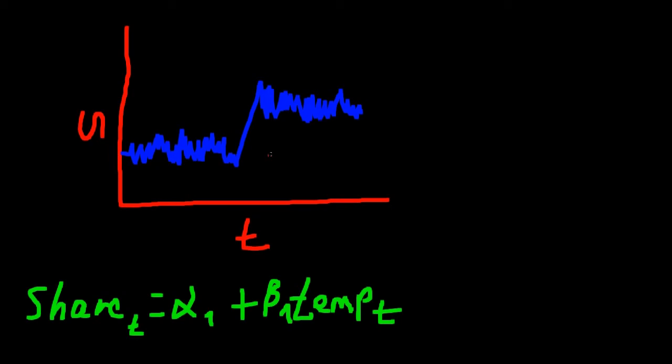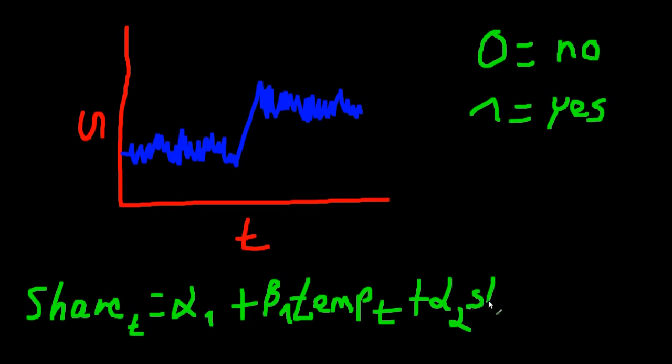Let's construct a dummy variable that indicates whether the oil price shock has happened or not. So the dummy variable equals zero if there is no oil price shock or if the oil price shock has not happened yet, and one if the oil price shock has happened. So our model actually becomes share at time T equals alpha 1 plus beta 1 times temperature at time T plus alpha 2 times shock, this is our dummy variable at time T.